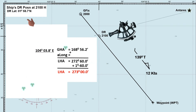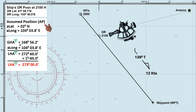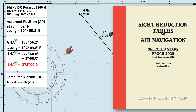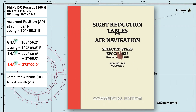This is the procedure for determining our assumed position. In this scenario, our assumed latitude is 2 degrees north, and our assumed longitude is 104 degrees 3.8 minutes east. The assumed position is commonly used when we determine the computed altitude and the true azimuth, or true bearing, of celestial bodies using a sight reduction table — frequently referred to as Table 249, where volume 1 is used for selected stars.